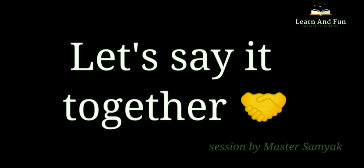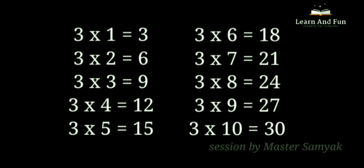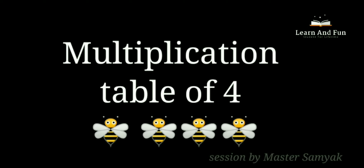Let's say it together. 3 ones are 3. 3 twos are 6. 3 threes are 9. 3 fours are 12. 3 fives are 15. 3 sixes are 18. 3 sevens are 21. 3 eights are 24. 3 nines are 27. 3 tens are 30. Multiplication Table of 4.